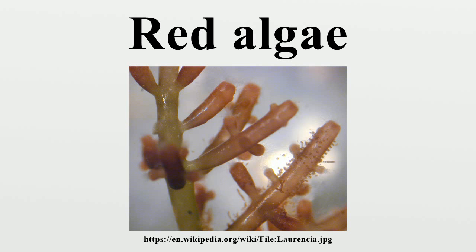as food reserves outside their plastids. Most red algae are also multicellular, macroscopic, marine, and use sexual reproduction to reproduce. They have alternation of generations and may have three generations rather than two.